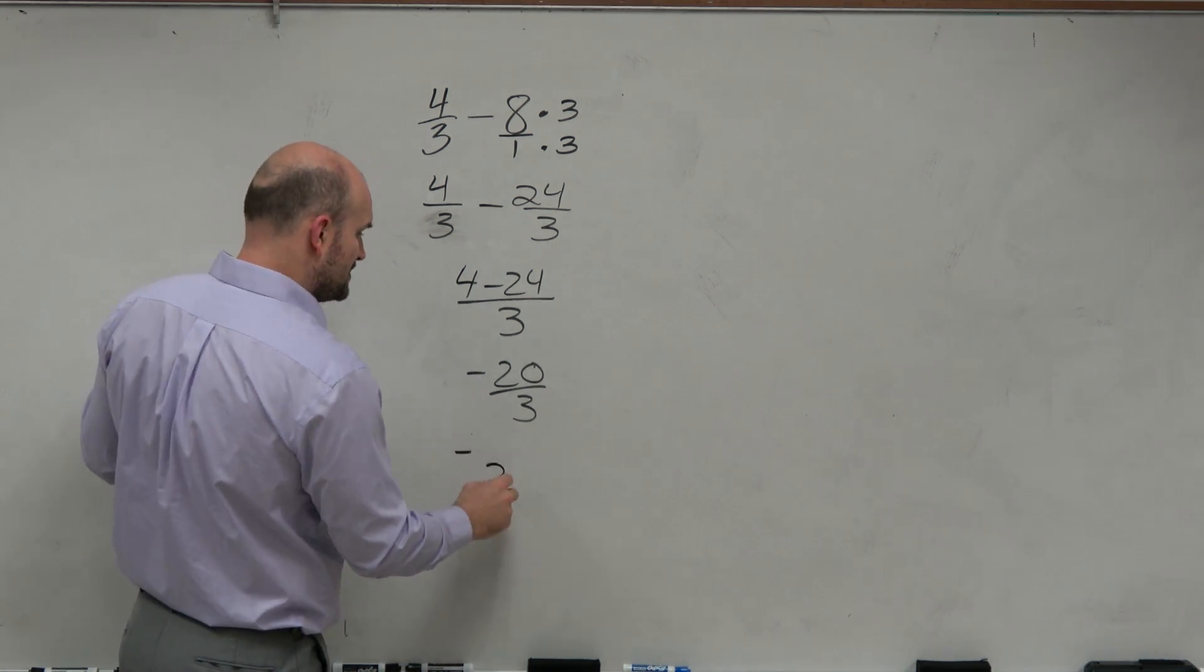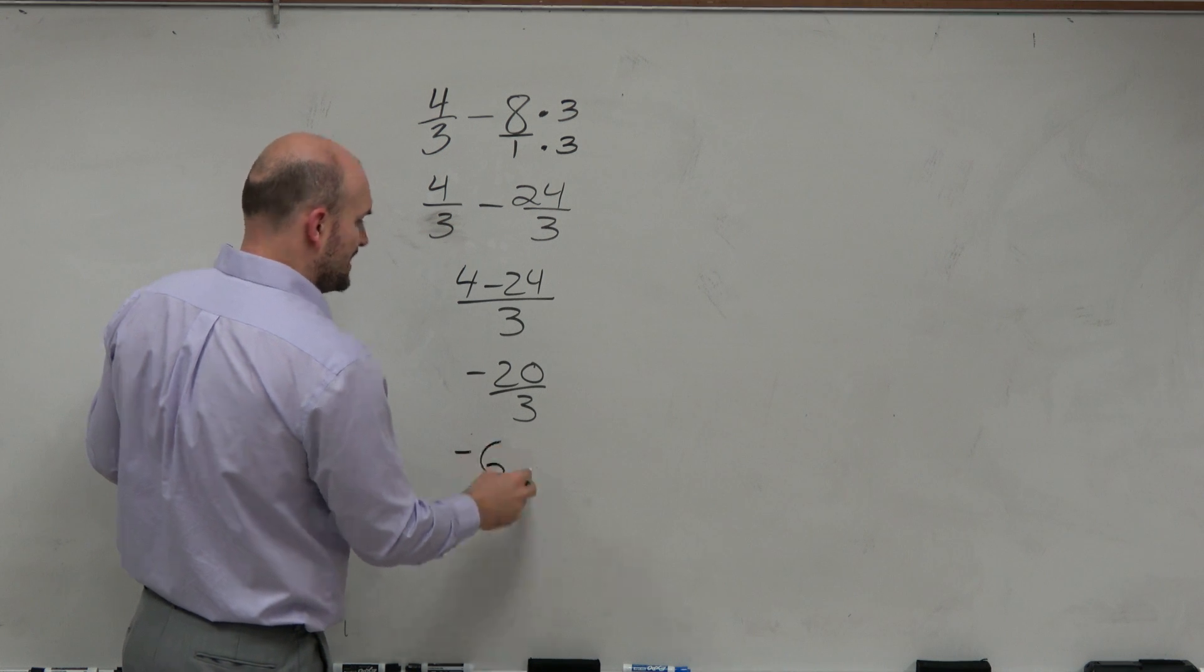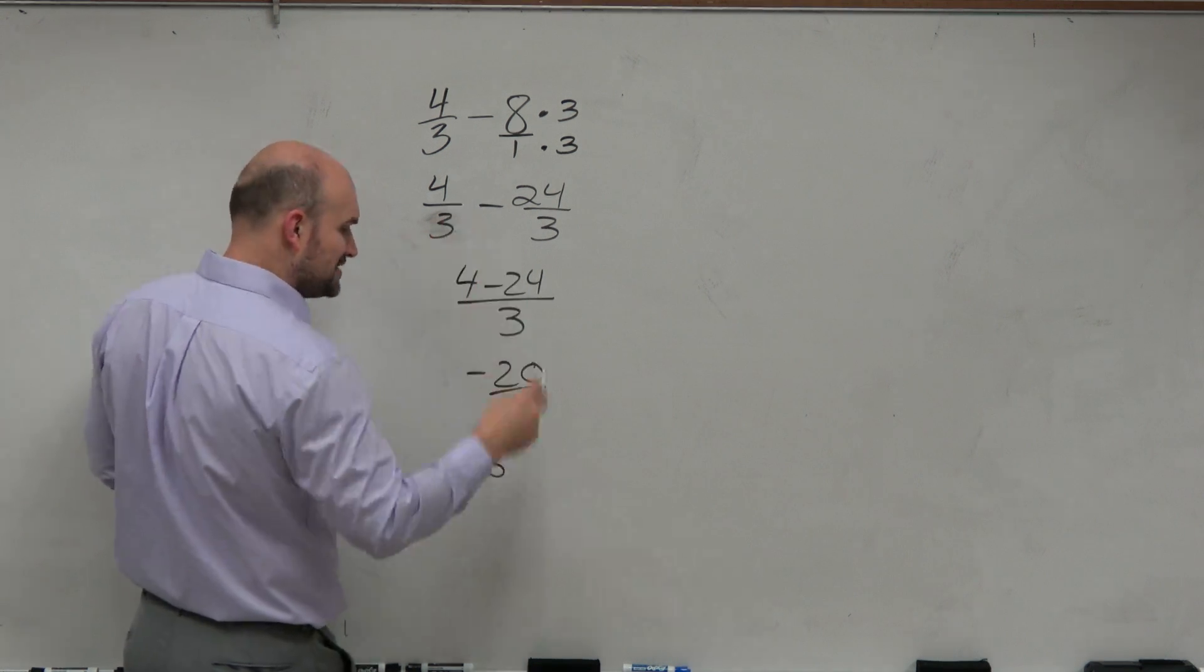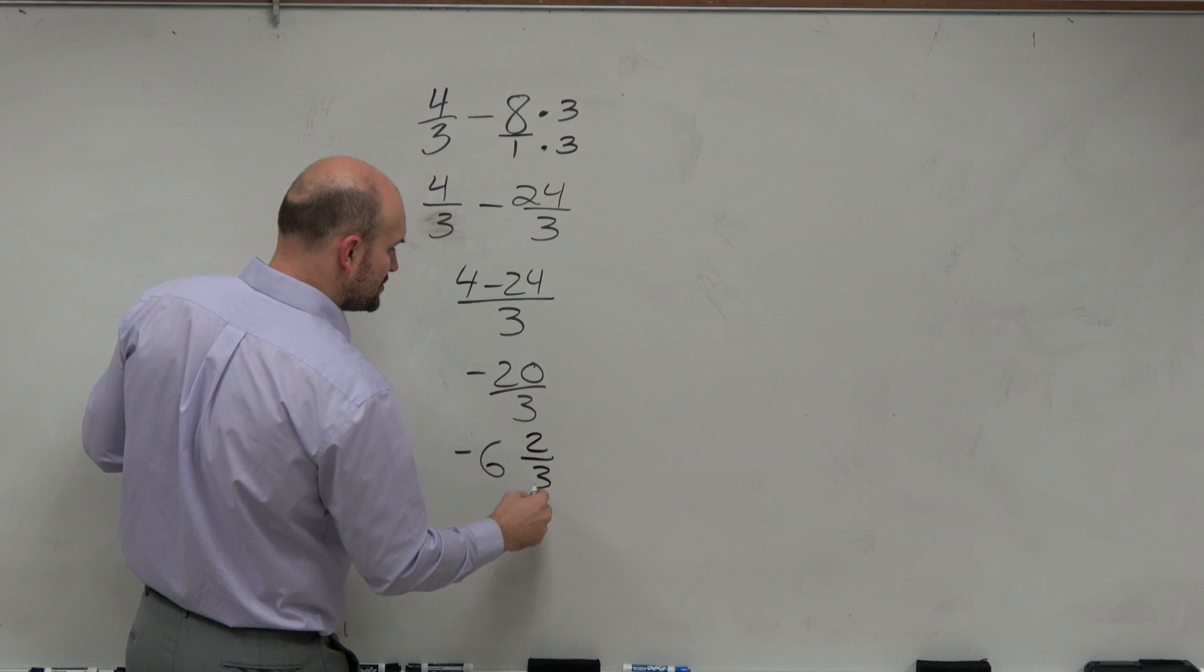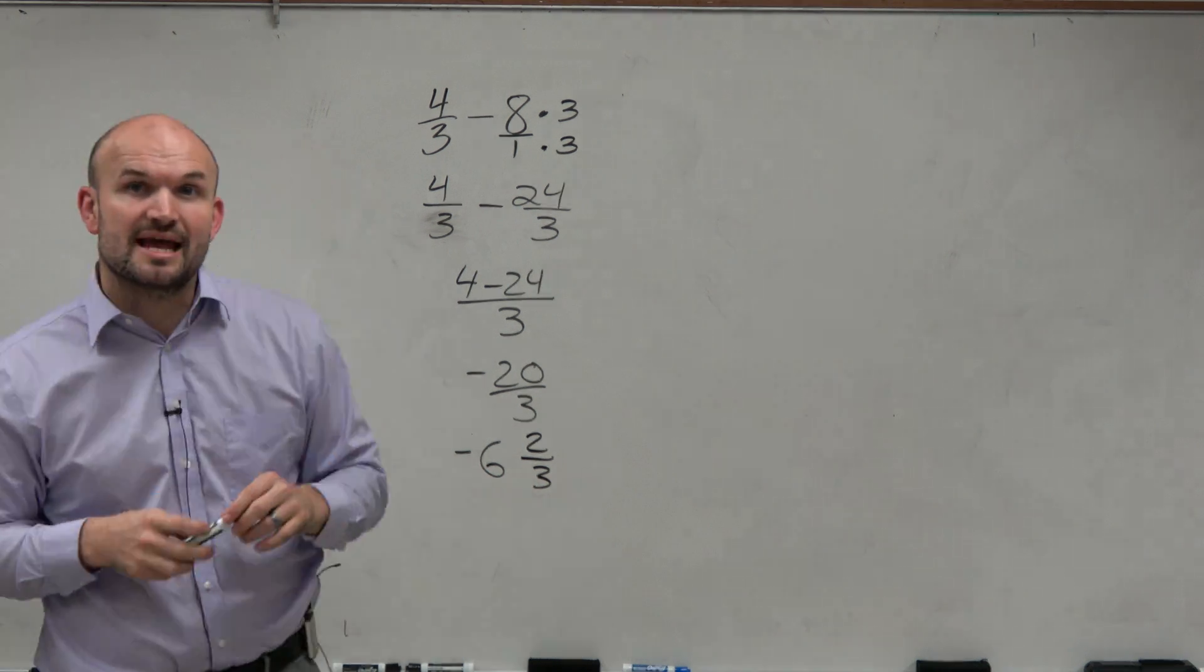So therefore, the negative is just going to be out in front. So that's a negative 6. And therefore, that would be 18 with the remainder of 2. So that would be 2 thirds. So the answer is negative 6 and 2 thirds.